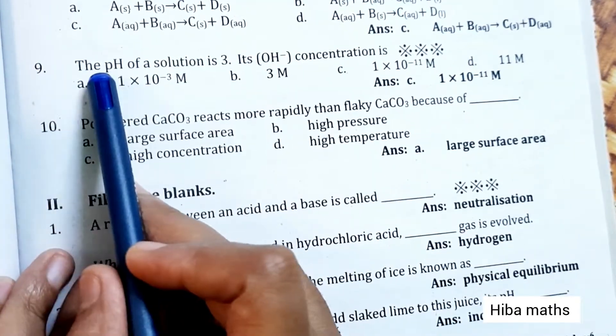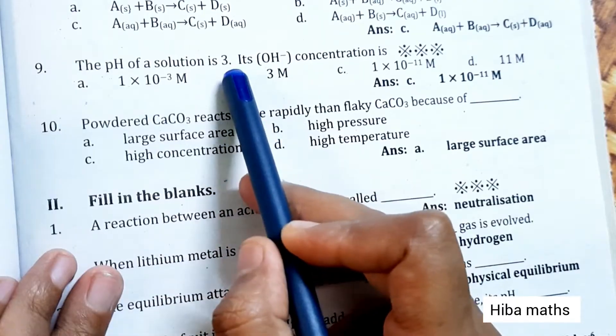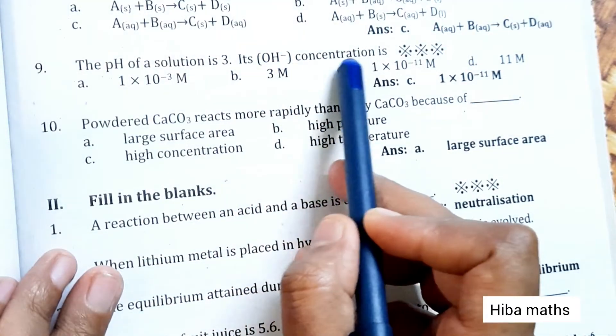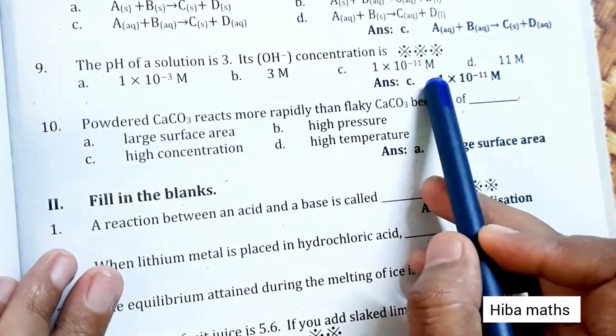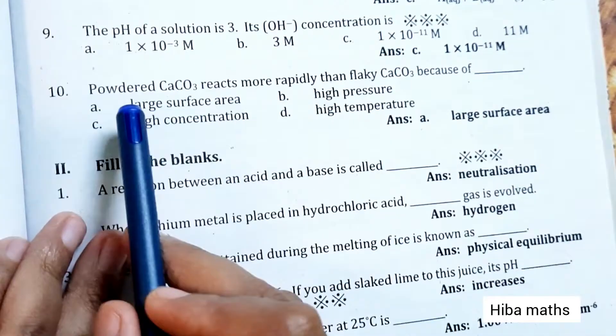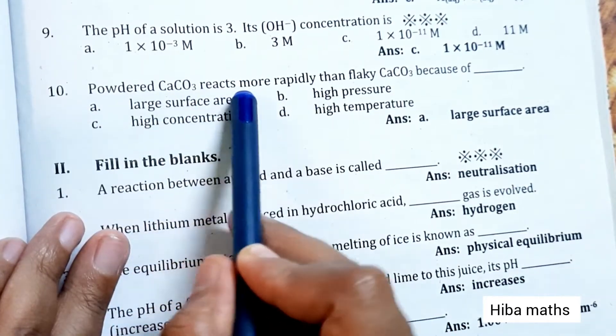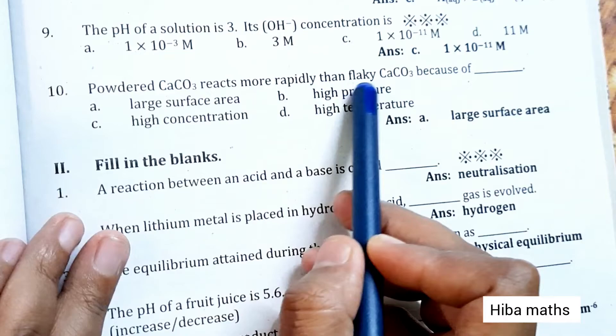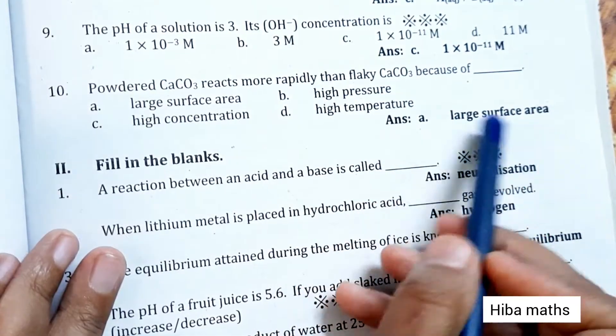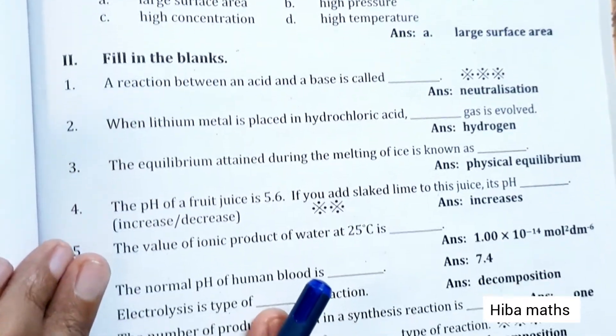The pH of solution is 3, its OH minus concentration is 1 into 10 power minus 11 M. Powdered CaCO3 reacts more rapidly than flaky CaCO3 because of large surface area.